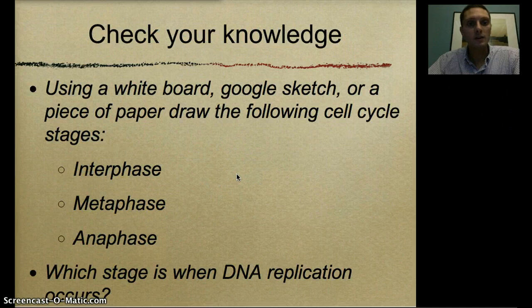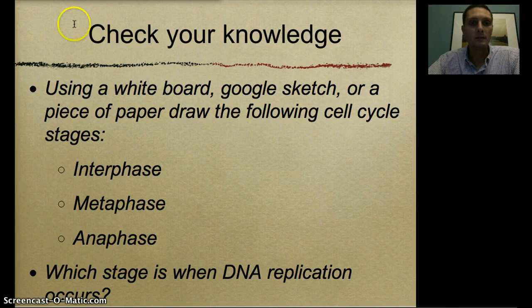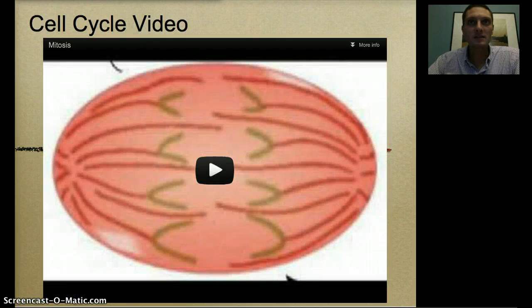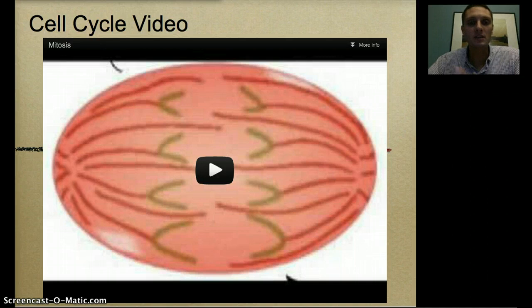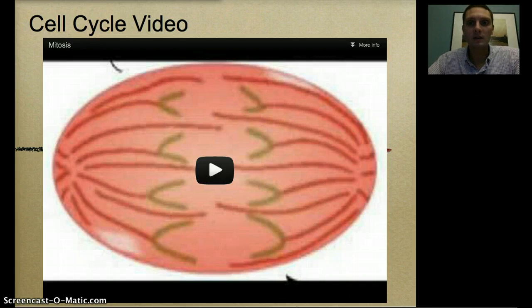To check your knowledge, on a whiteboard, in Google Sketch, or on paper, draw out the following stages of the cell cycle: interphase, metaphase, anaphase, and identify where DNA replication occurs. I'll also link a video showing mitosis walking through all the steps with animation so you can see what's happening. That's it for the cell cycle — we'll move on from here and look more specifically at DNA structure and how it replicates.